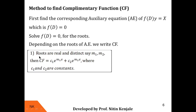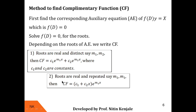Case 1: If roots of the auxiliary equation are real and distinct, say m1 and m2, then the complementary function is CF = c1·e^(m1·x) + c2·e^(m2·x), where c1 and c2 are constants, m1 and m2 are the roots, and x is the independent variable. Case 2: If roots are real and repeated, say m1, m1, then CF = (c1 + c2·x)·e^(m1·x).